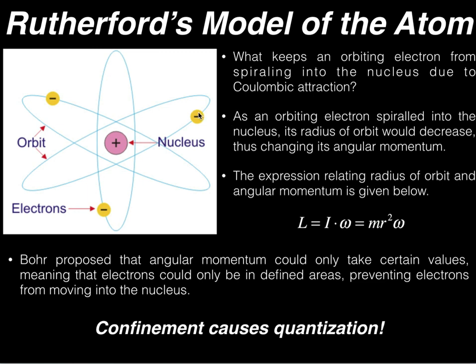If we're changing the radius and it's dropping, dropping, dropping, and the radius could take on a continuum of values, therefore the angular momentum should also change and should also be able to take on a continuum of values.